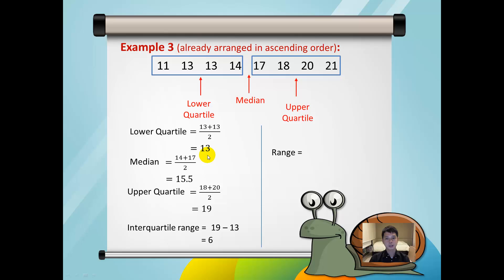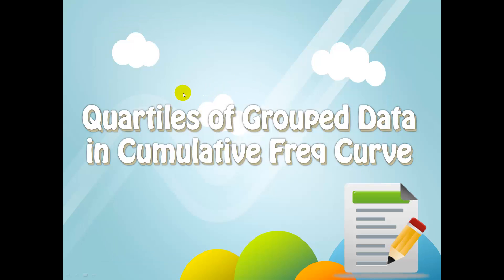Finally, the range equals the biggest number minus the smallest number, which is equal to 10. Looking at these three examples, all you need to do is keep dividing the sets of data into half to find the median, upper quartile, and lower quartile. We shall now look at finding the quartiles of grouped data, and we usually do this by using the cumulative frequency curve.